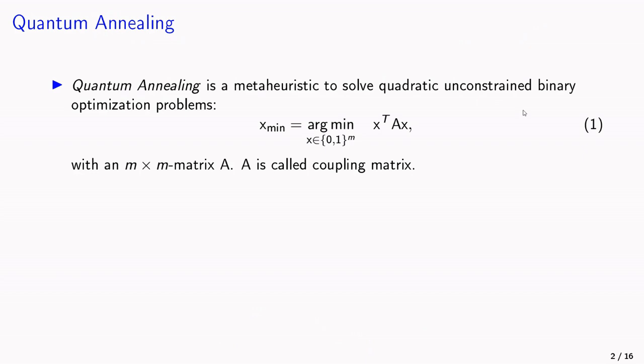Quantum annealing is a meta-heuristic to solve quadratic unconstrained binary optimization problems, as you can see in equation 1. The matrix A here is called coupling matrix.